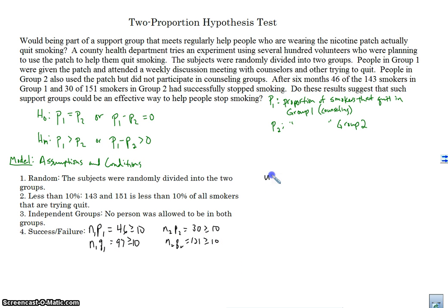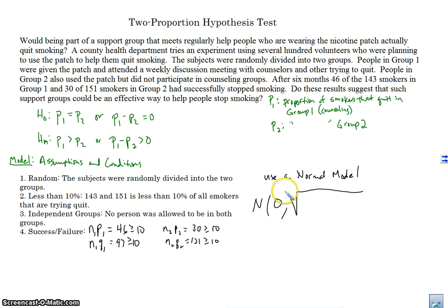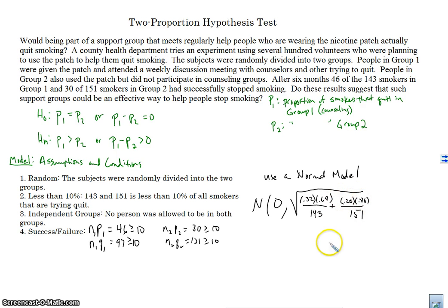Since all conditions are satisfied, we'll use a normal model. Our normal model has a mean of zero — as stated in the null hypothesis — and a standard deviation equal to the square root of (p1·q1 / n1) + (p2·q2 / n2), which is the square root of (0.32 × 0.68 / 143) + (0.20 × 0.80 / 151). Note that q is one minus the probability of success, i.e., the probability of failure.